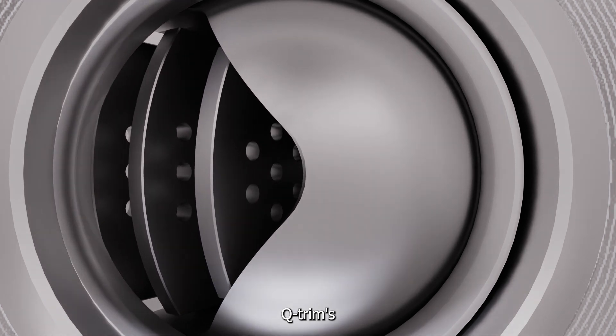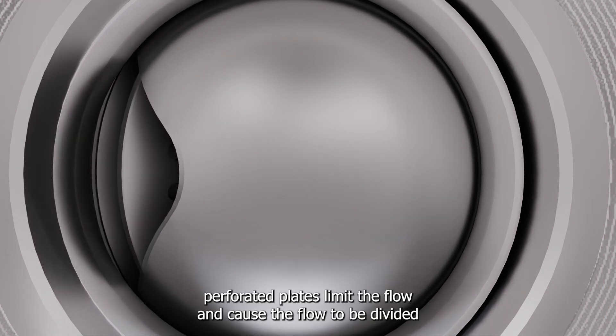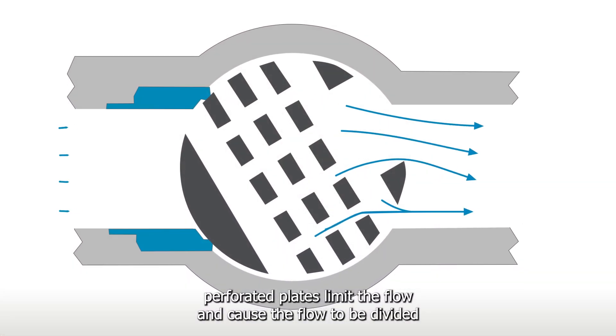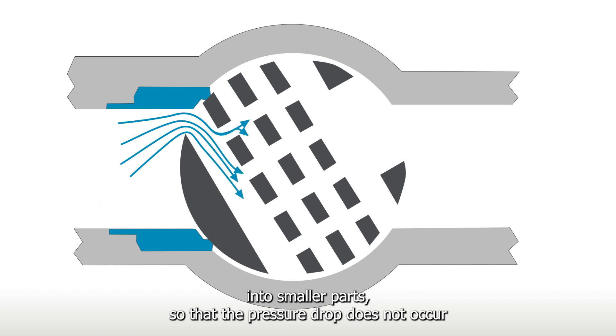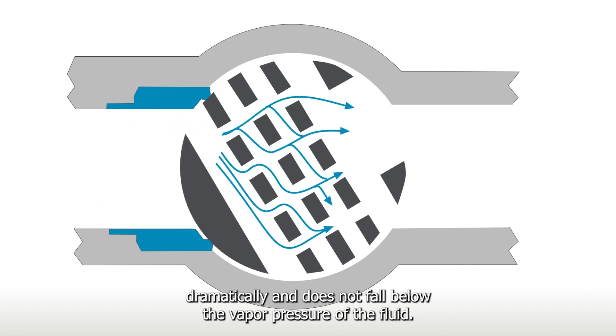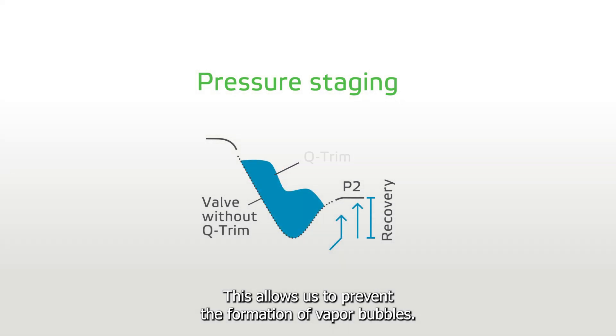Q-Trim's perforated plates limit the flow and cause the flow to be divided into smaller parts so that the pressure drop does not occur dramatically and does not fall below the vapor pressure of the fluid. This allows us to prevent the formation of vapor bubbles.